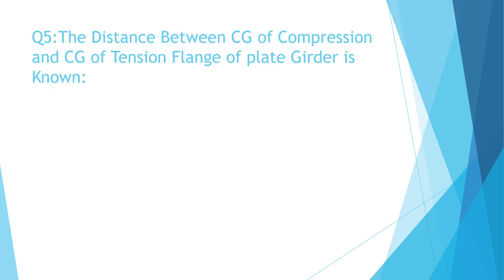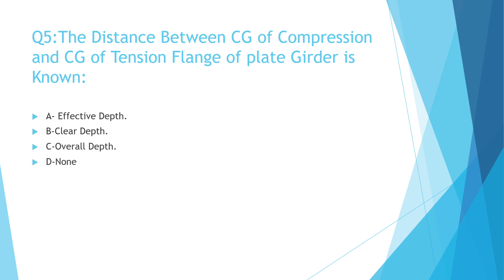Question number 5: The distance between the CG of compression and CG of tension flange of a plate girder is — a. effective depth, b. lever arm, c. 0.9 effective depth, d. none. The correct answer is a. effective depth.